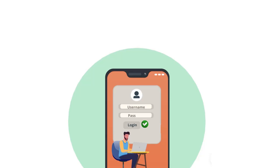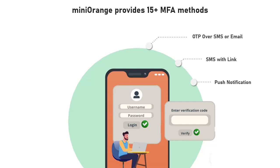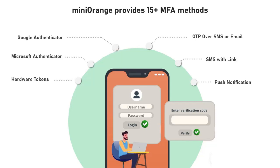Mini Orange provides 15 plus MFA methods like OTP over SMS or email, SMS with link, push notification, Google Authenticator, Microsoft Authenticator, hardware tokens, phone callback, Mini Orange soft token, and many more.